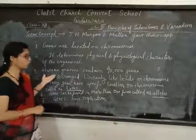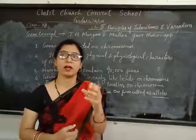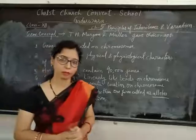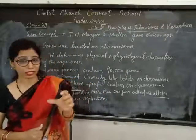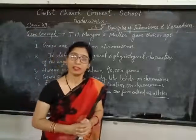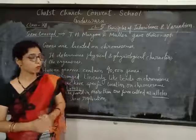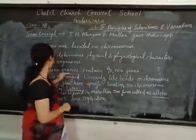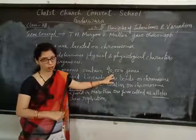Third point: human genome contains 40,000 genes. Means if we talk about human beings, human beings have 46 chromosomes, and in these chromosomes the number of genes is 40,000. In human beings, human genome contains 40,000 genes.